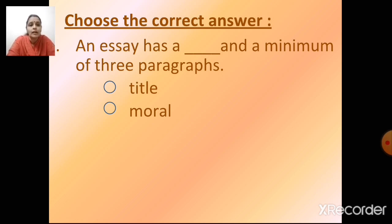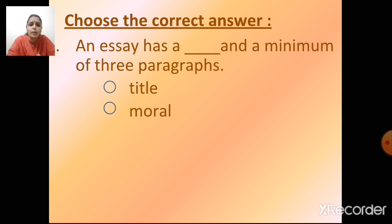Let's see the type of questions that will come in your exam. We have to choose the correct answer — two options are given and you select the correct one by clicking on it. So: an essay has a dash and a minimum of three paragraphs. As I said earlier, an essay has a minimum of three paragraphs. And one more thing — does an essay have a title or a model? An essay has a title. Always give a title to the essay. The first thing we do is give a title. So an essay has a title and a minimum of three paragraphs.